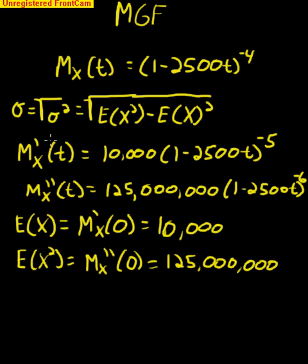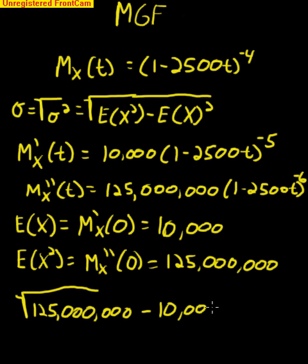Now all we have to do is apply this and we'll have our standard deviation. So we have the square root of 125 million minus 10,000 squared. And this is going to give us 5,000.